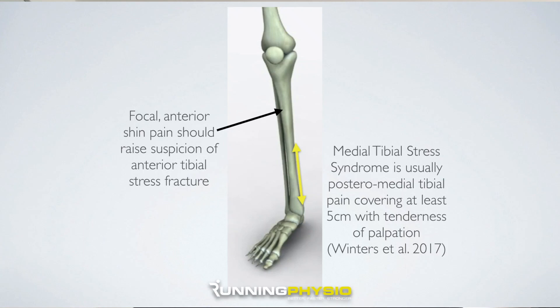Medial tibial stress syndrome usually presents as posterior medial tibial pain that's there with impact during running and tends to settle with rest. We think this is usually quite diffuse — spread out along the posterior medial tibial border. There's research suggesting that if you're palpating that region, you'd expect the pain to cover at least five centimeters. So this helps us determine this is a more likely diagnosis.